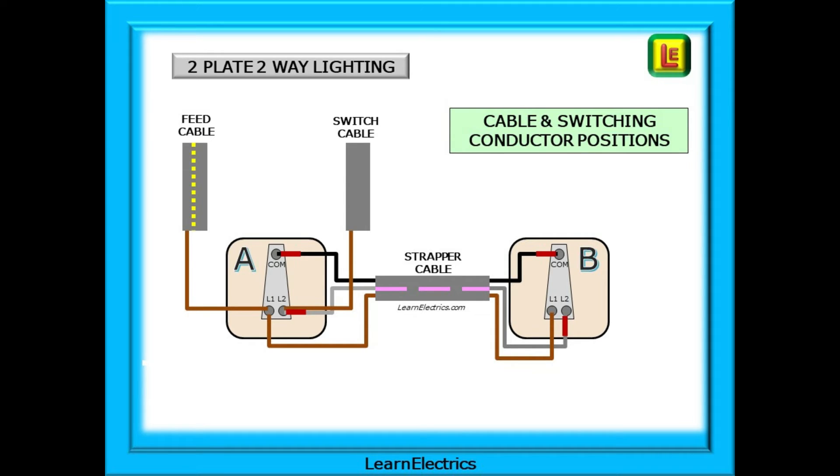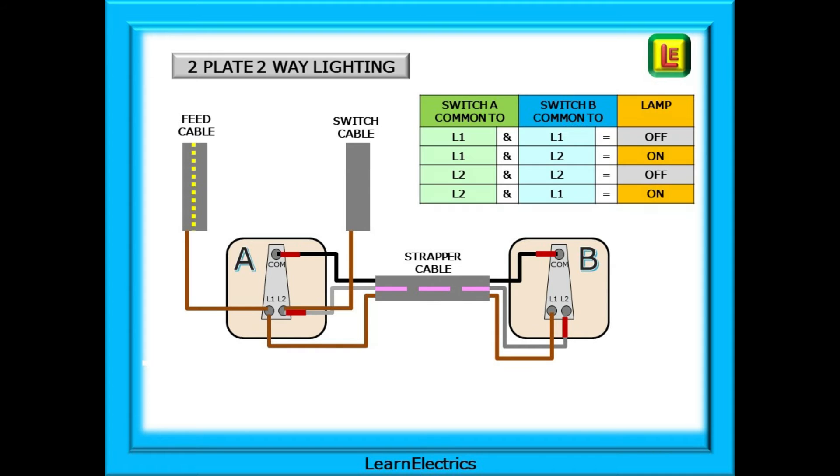These are the conductors that perform the switching functions. The chart shown here will show the effect of different switch positions on the lamp. Pause the video and follow the route of the electricity down the feed cable, through the switches and along the switch cable to the ceiling rows.